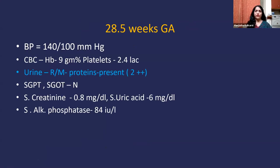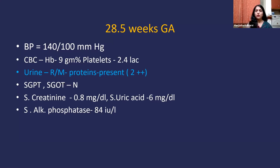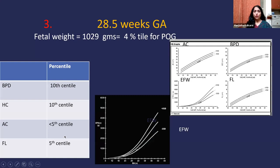At 28.5 weeks, the obstetrician found that her BP had raised to 140/100 mmHg and there was urinary proteinuria. Blood parameters were otherwise normal. She was started on proper PIH care and sent to us for a repeat Doppler evaluation. The growth scan showed AC had gone below the 5th centile, and the fetal weight was at the 4th centile.